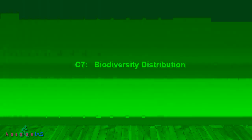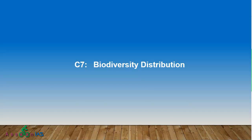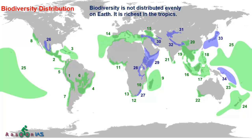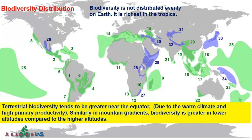Next: biodiversity distribution. This is an important point — biodiversity is not evenly distributed on Earth. Generally, tropics have more biodiversity because of high primary productivity due to warm climate and high rainfall. Biodiversity is greater near the equator — that is, in the tropics — because of warm climate and high primary productivity.